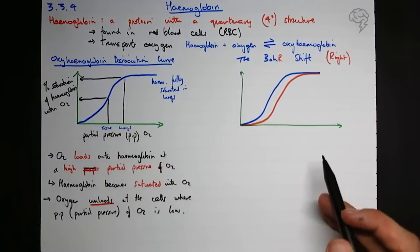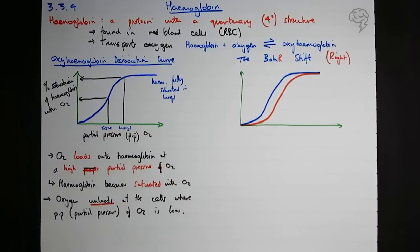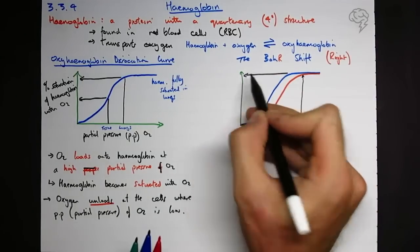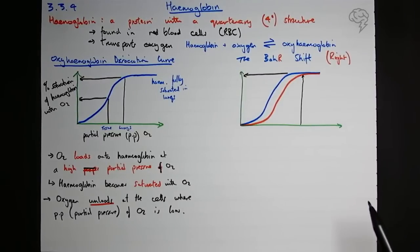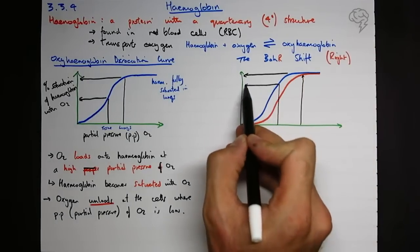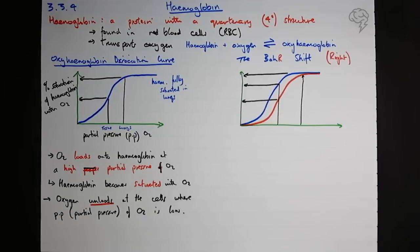My axes are the same. There's no need to draw them out again. At the lungs it's still going to be saturated. So that hasn't changed. It doesn't shift so much that it's not fully saturated at the lungs. But if we draw a line for the tissues, probably not the most realistic, but it demonstrates the point quite nicely.